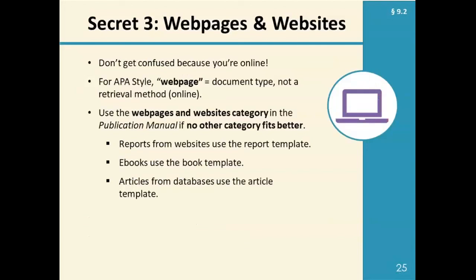Piggybacking off of that, we have secret three about web pages and websites. For APA style, when we use the word 'web page,' we mean a document type, not a retrieval method. We have a new category in the seventh edition called 'web pages and websites,' and that category is a category of last resort — use it only if no other category fits better. If you're looking at a report on a website, use the report template. If you're looking at an e-book online, use the book template. If you're looking at an article on a website, use the article template. Only when nothing else fits should you use the web page category.